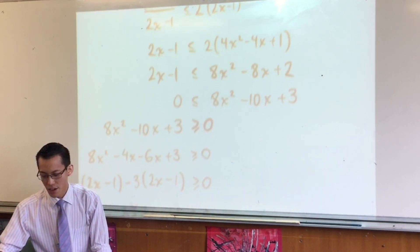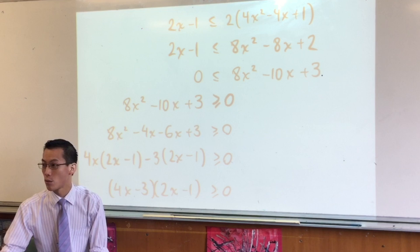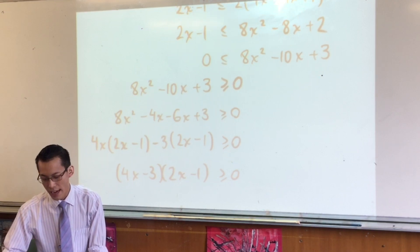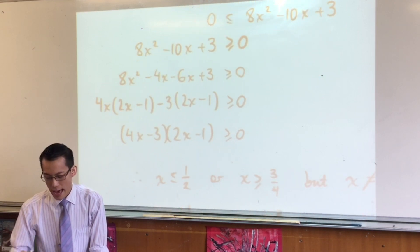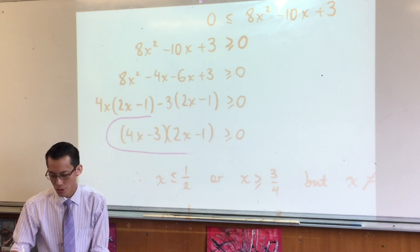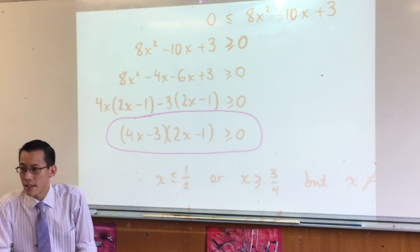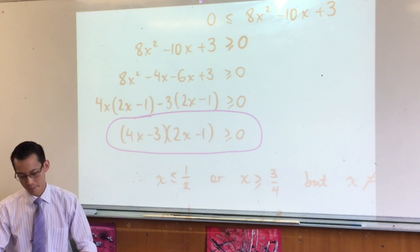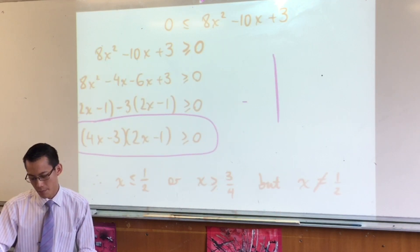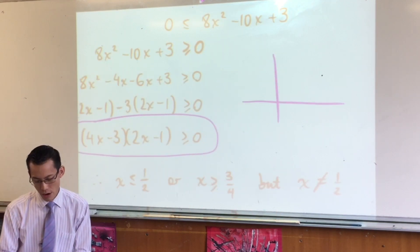Once you've done that, you get some simplifying, you get a quadratic on the right-hand side. Once you tidy that up, you factorize, and then you get to this point here. Now please note, you get to this quadratic, and you factorized it, and I think to myself, okay, I know what this looks like. There are two roots.